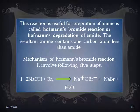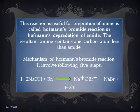This reaction is useful for the preparation of amines and is called Hofmann Bromide reaction or Hofmann degradation of amide. The resultant amine contains one carbon atom less than the amide. Now let us start the mechanism of Hofmann Bromide reaction, which involves the following five steps. Step 1: 2NaOH + Br₂ gives NaOBr (sodium oxybromide) plus NaBr plus H₂O.